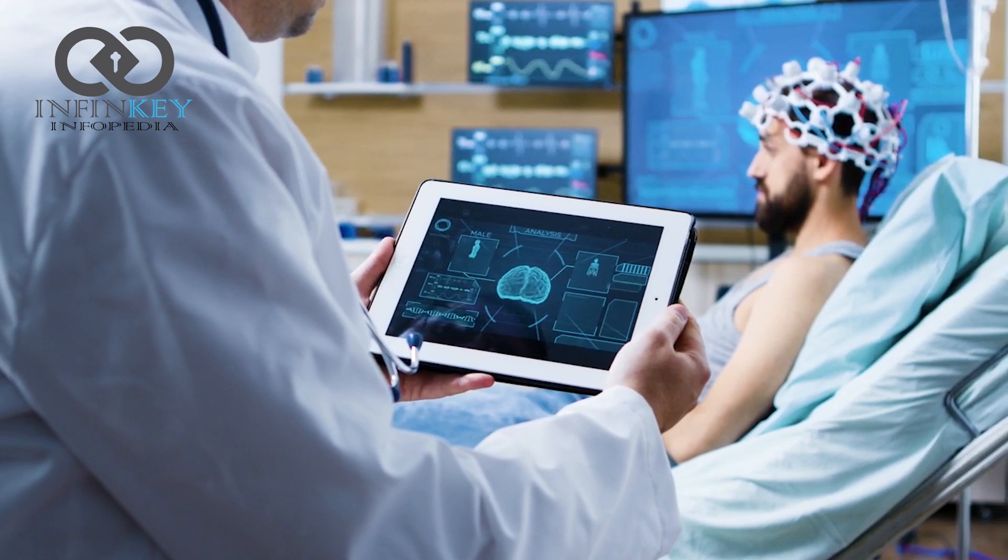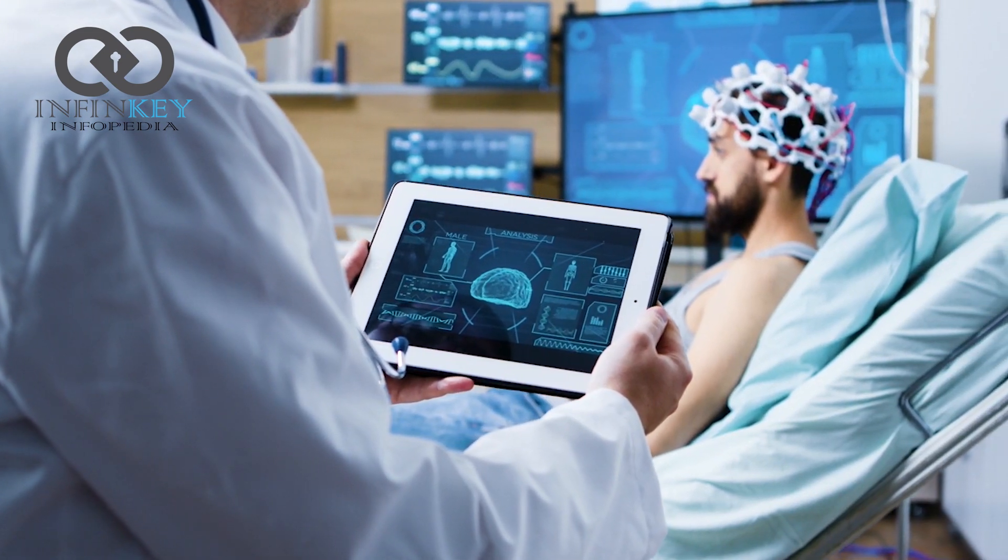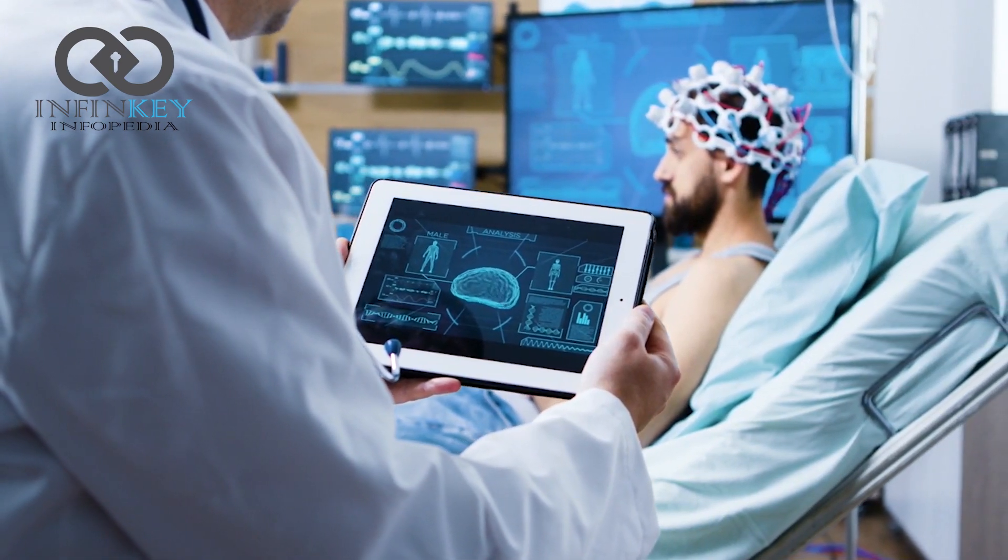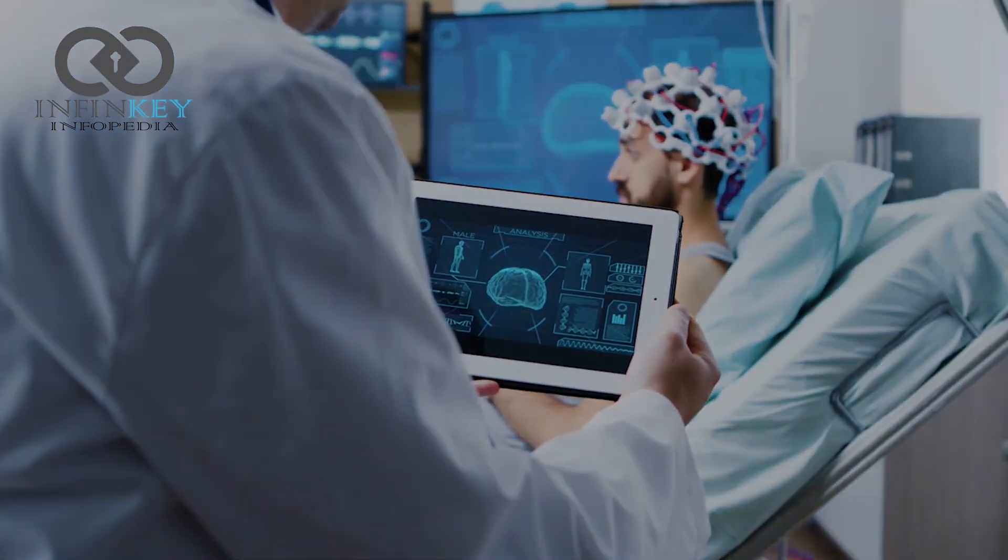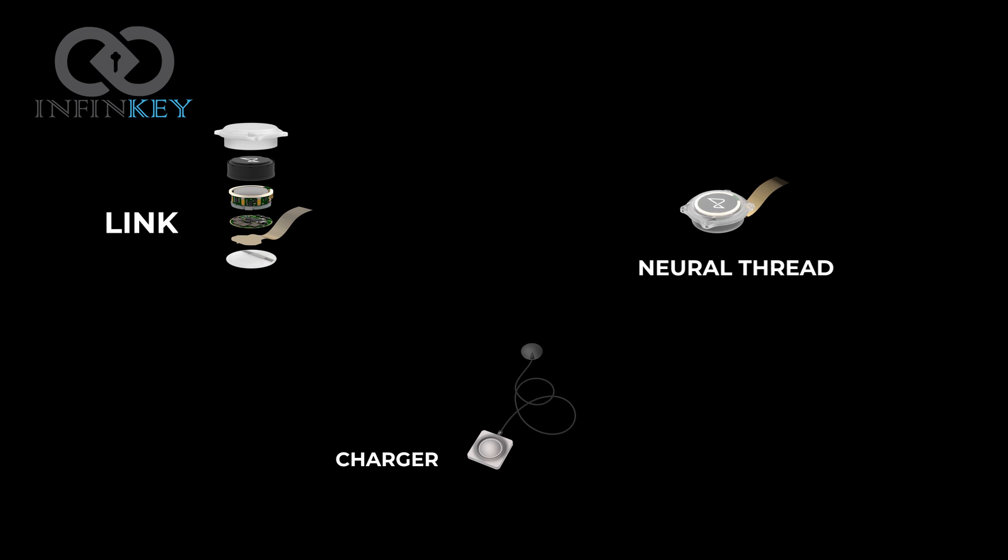From the chip, an array of tiny wires, each roughly 20 times thinner than a human hair, fan out into the patient's brain. The wires are equipped with 1024 electrodes, which are able to monitor brain activity and electrically stimulate the brain.